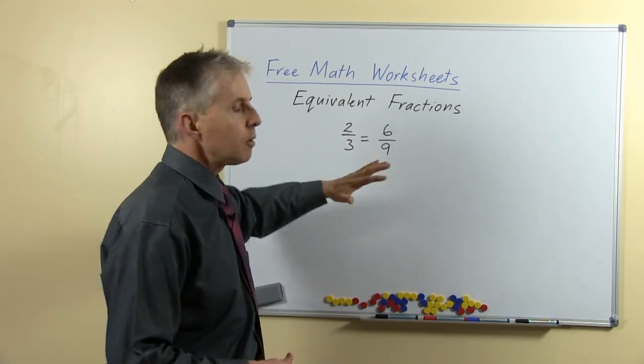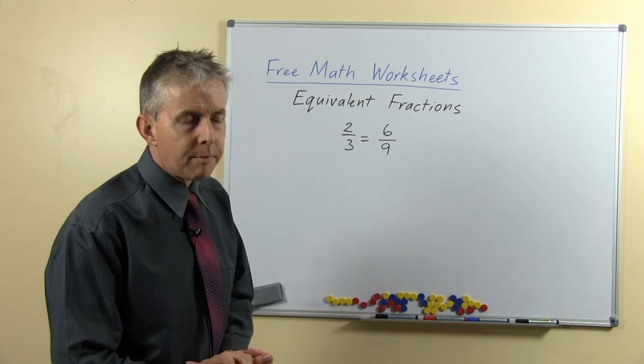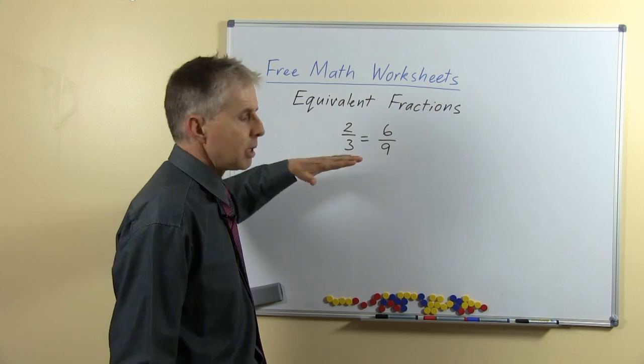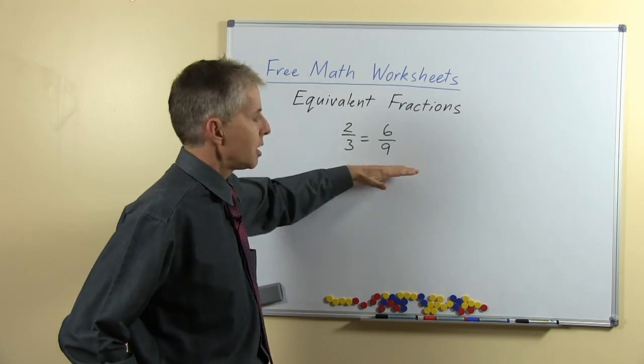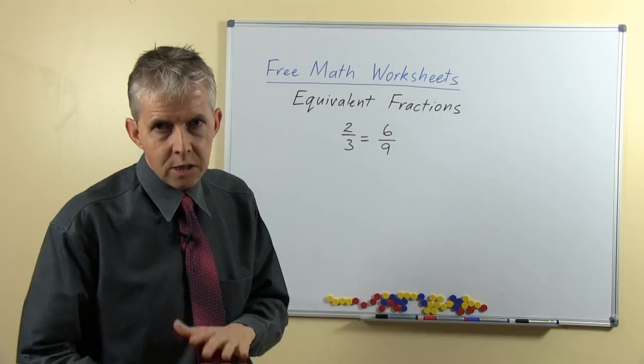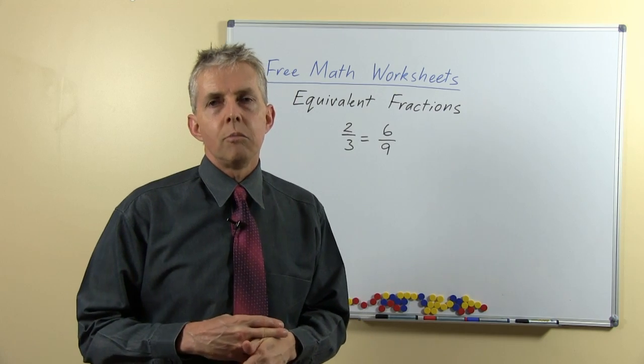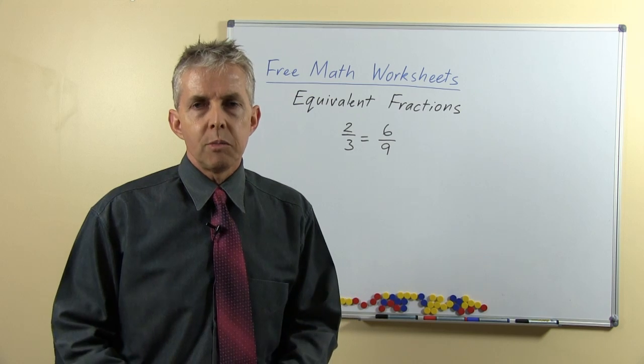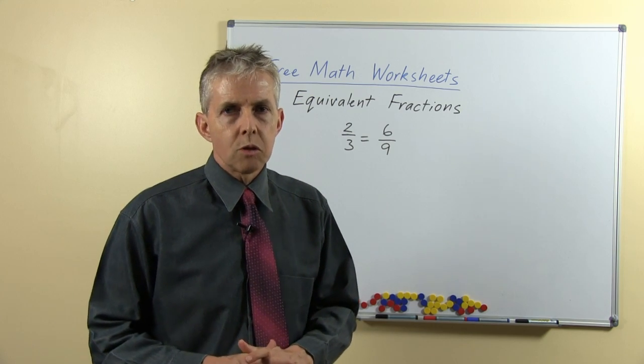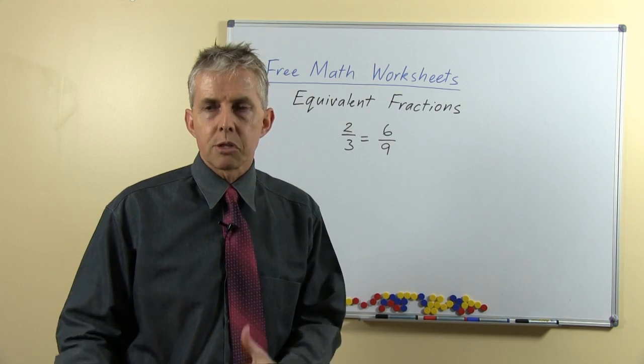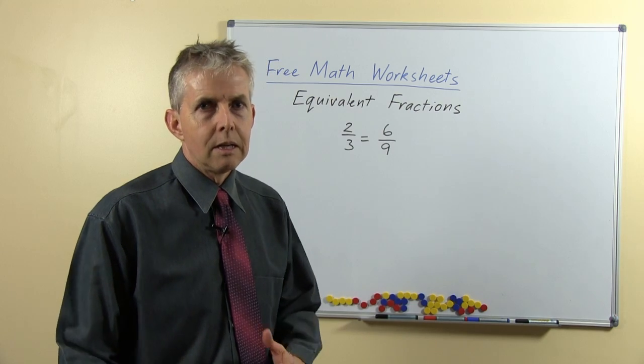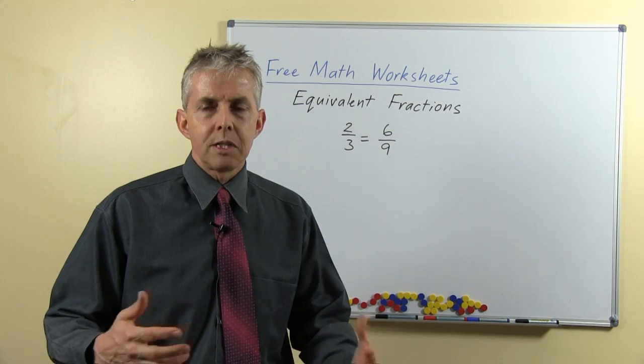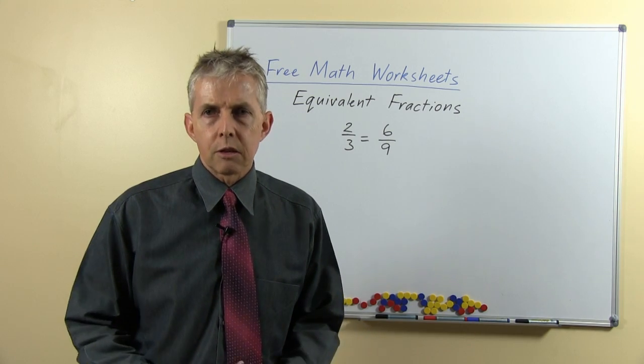So here's an example, a well-known process for teachers of maths at least. I think the children find it difficult, but teachers are familiar: two-thirds equals six-ninths. Now the first thing to say is what I'm not recommending here. As we teach this to students, until they become familiar with what it all means, I'm not suggesting that we teach them a process or an algorithm for working it out. I think a lot of children have learned a process but didn't really understand it, and so they're confused.